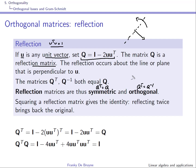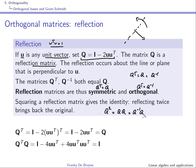This reflection matrix is symmetric, so Q transpose equals Q, and it is also orthogonal, so Q transpose equals Q inverse. Therefore Q transpose equals Q equals Q inverse. If you square the reflection matrix, you apply a reflection twice, which should produce the identity matrix. Indeed, Q squared equals Q times Q, but Q equals its inverse, so it equals Q inverse times Q, which is the identity matrix.